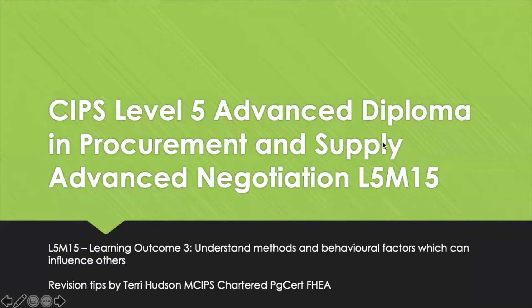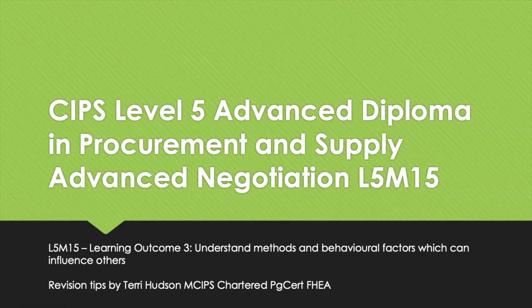Hello and welcome to Revision Tips for CIPS Level 5 Advanced Diploma in Procurement and Supply. This is Module 15, Advanced Negotiation, Learning Outcome 3, which is to understand methods and behavioural factors which can influence others. We'll look at those influences on individuals and groups, and the behavioural factors that influence individuals.